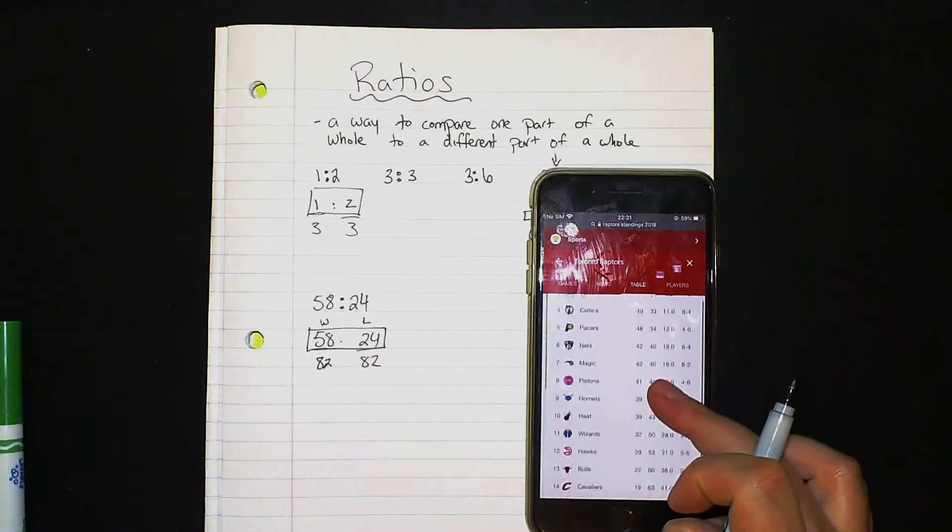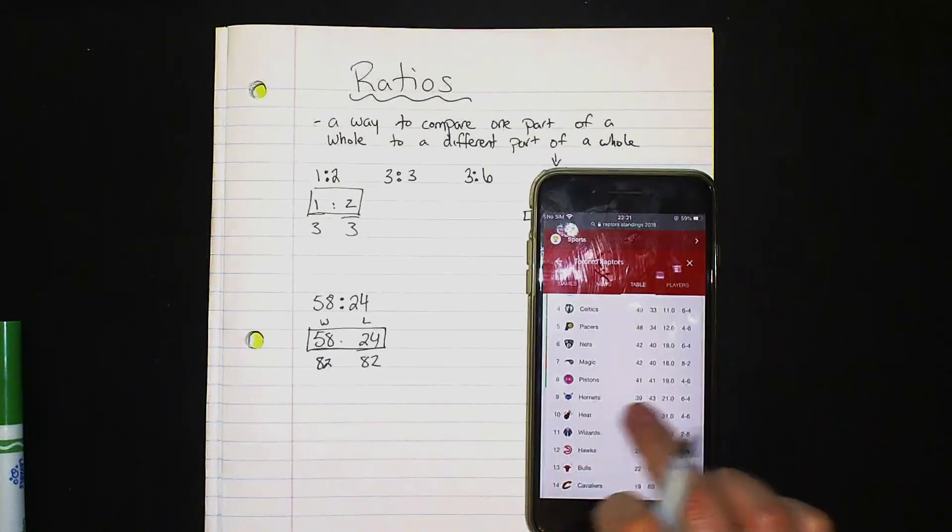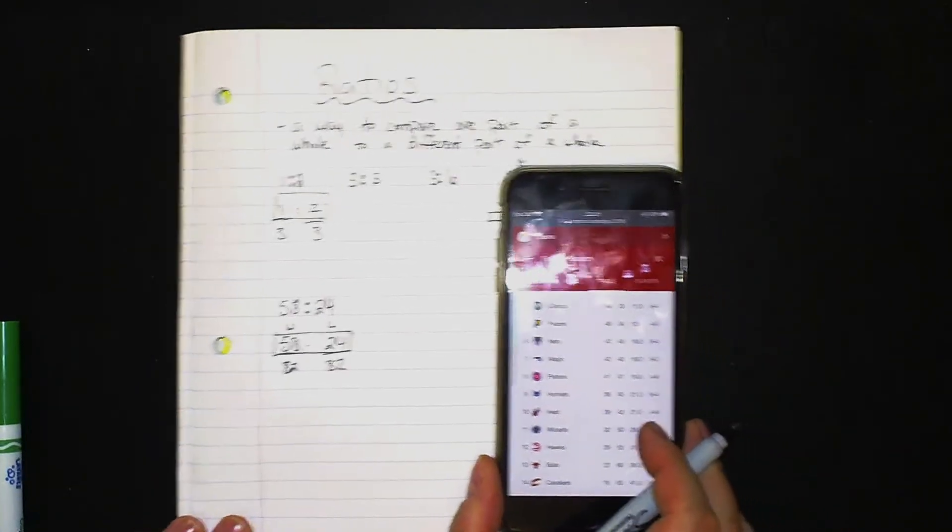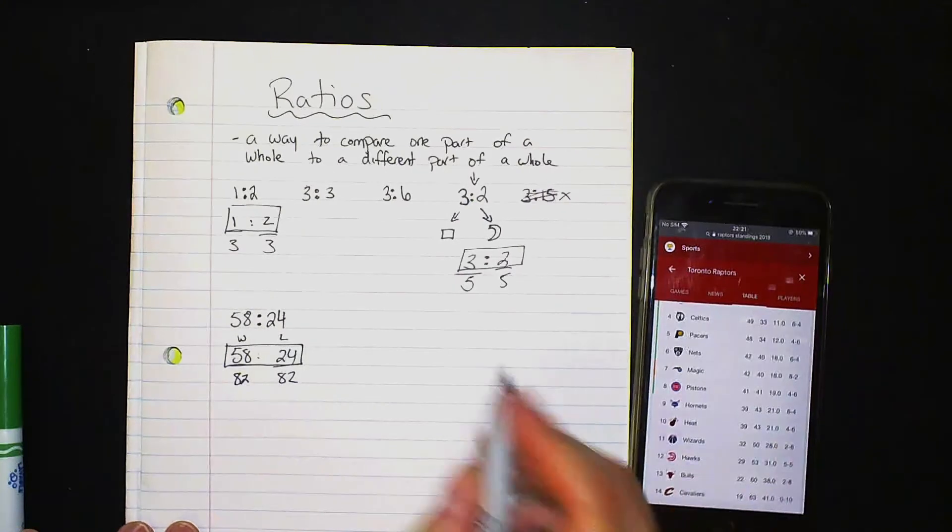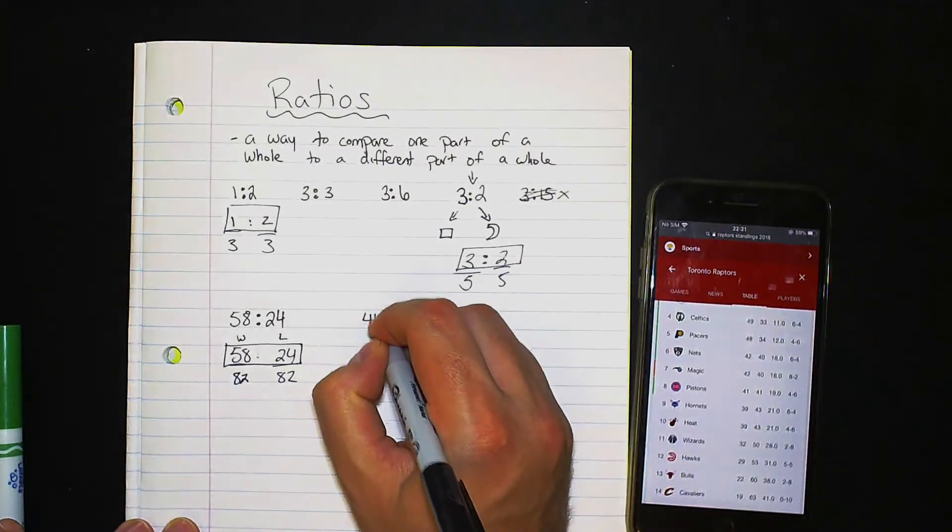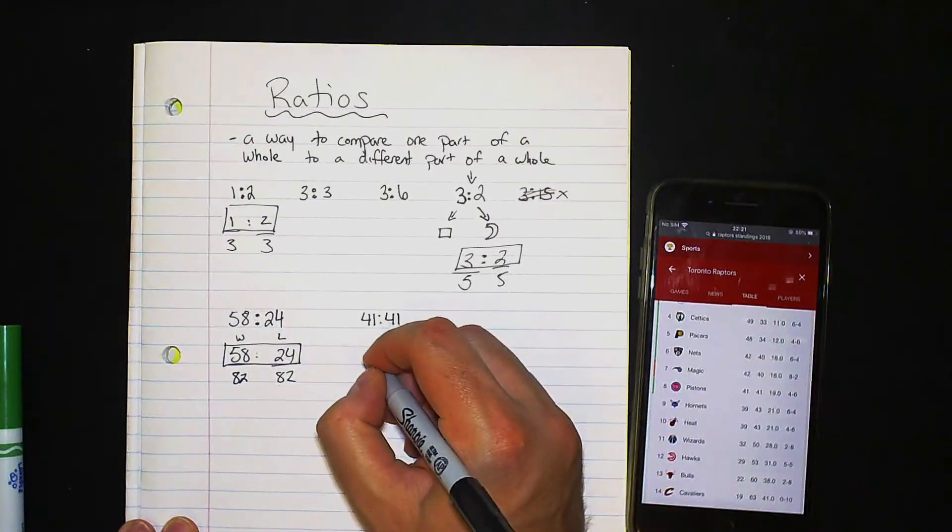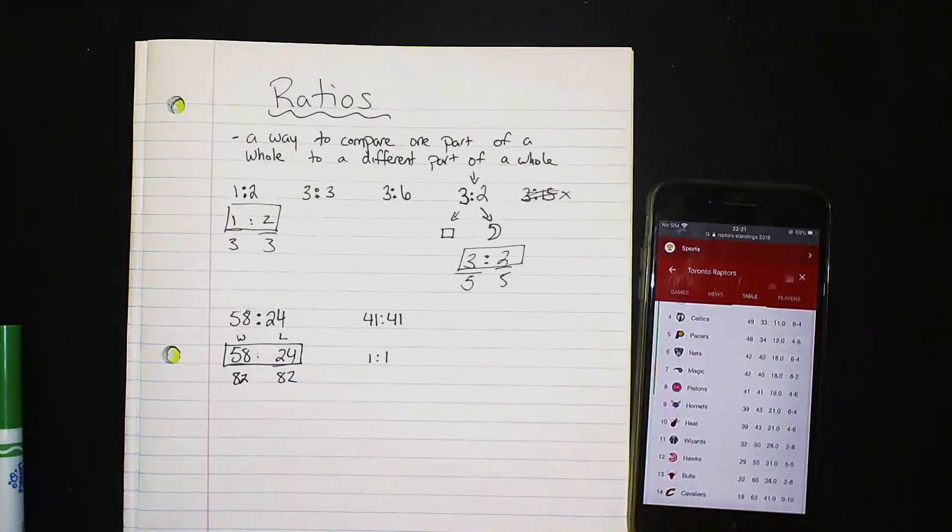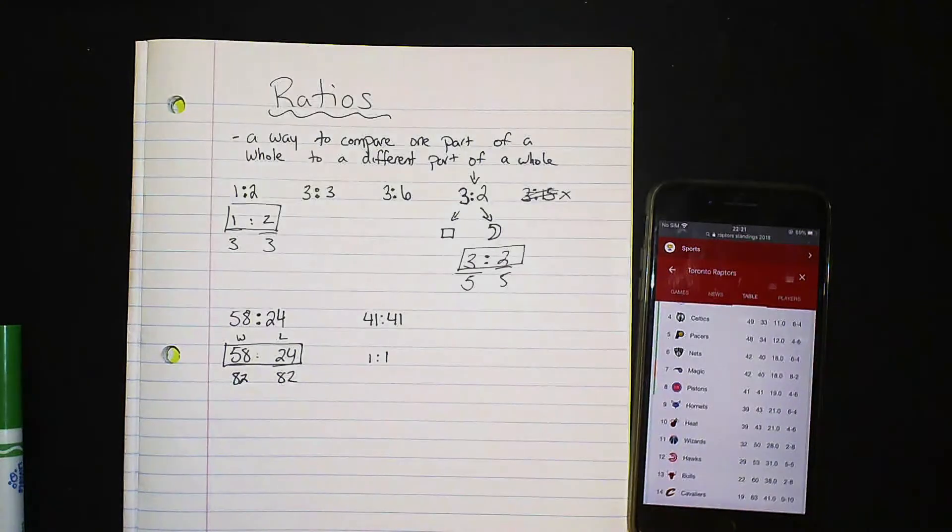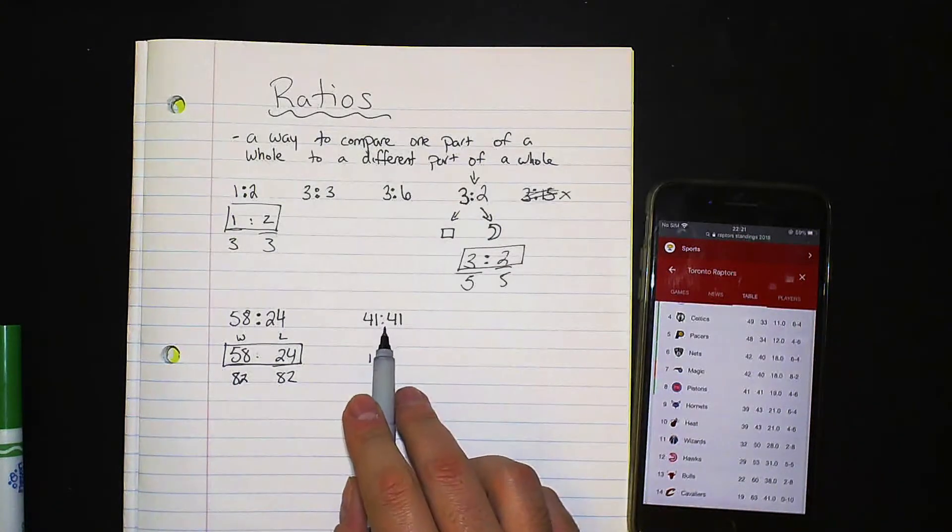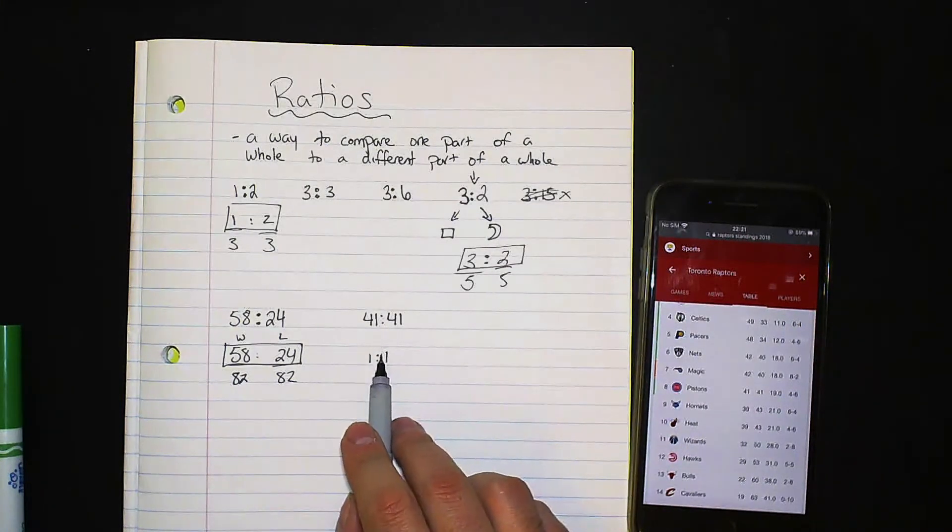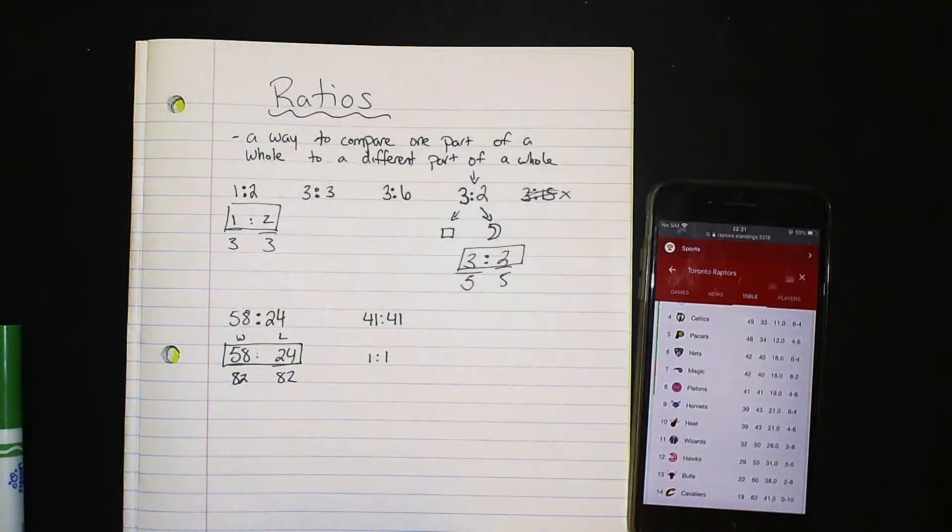If we had to pick a team and we take the Detroit Pistons for example here. This season they ended up with 41 wins, 41 losses. So basically for every one game they win they lose a game. So that is how we would write this fraction, 41 to 41 or 1 to 1. It's the same thing.